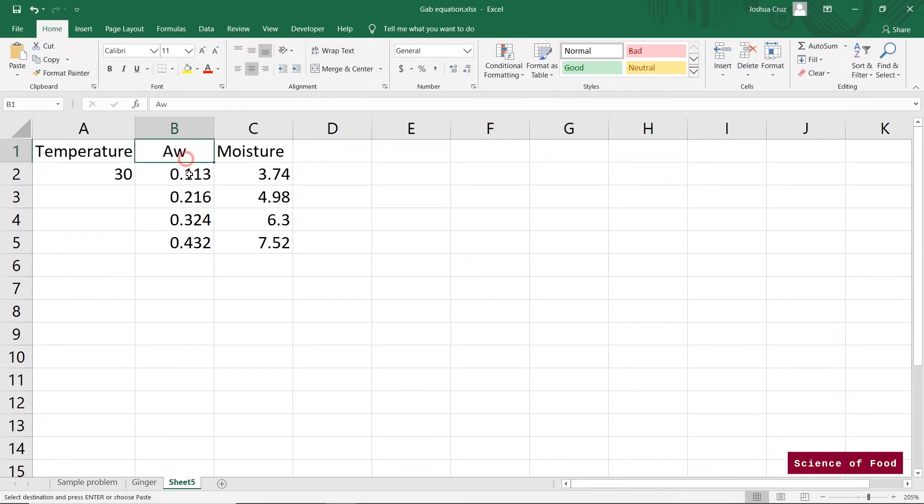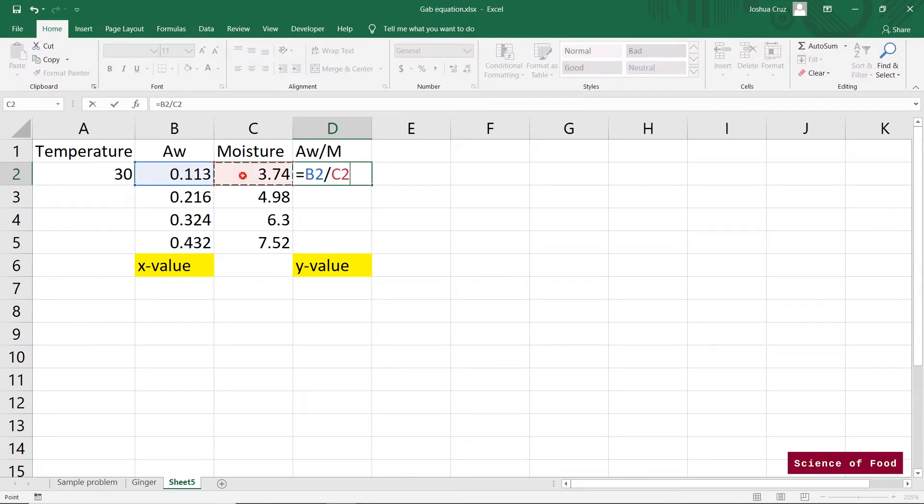And what I did is copied the values. So water activity here and their corresponding moisture content. So the first thing we would need to do is calculate for the water activity over moisture. And this is because water activity is our x value and the ratio of water activity and moisture content is our y value. And good thing about Excel is we can calculate it automatically.